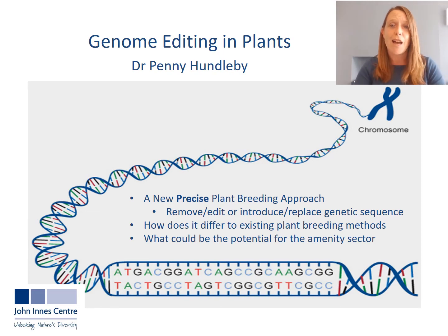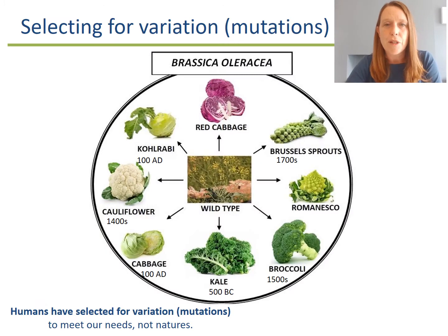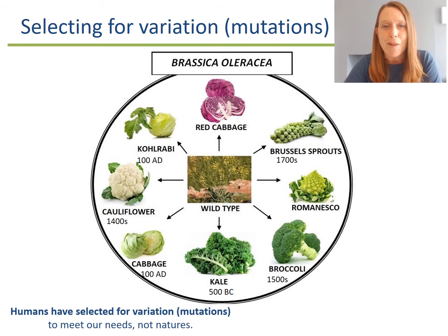Let's take a step back and start by looking at traditional plant breeding approaches. Plant breeding is all about selecting for desirable traits or genetic variation. If we take these different vegetable types which I'm sure you're all familiar with, what you might be less familiar with is the fact that they're all the same species. Their genetic sequence will be very similar, but small changes or mutations that have occurred have been selected for over the years to give us these different forms.